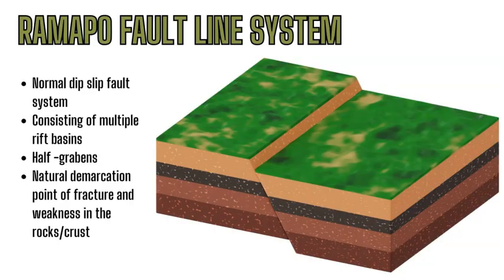Its name comes from the Native American tribe that came down and lived in this area of New Jersey from Connecticut in the 17th century. A fault line is a fracture in the crust, a break in the rock due to stress, strain and deformation, and the fracture becomes a fault line when there is movement on one or both sides of this fracture — and that is where you get earthquakes. This system is a bunch of normal dip-slip faults. Dip means there's an angle and slip means distance, so there's an angled fault line between two rock faces. This is part of a larger rift basin system with half-grabens, meaning one side moves down creating valleys. This is a natural demarcation point — a natural point of weakness and fracture in the crust caused by something in the past — and now this fault line moves occasionally, causing earthquakes.